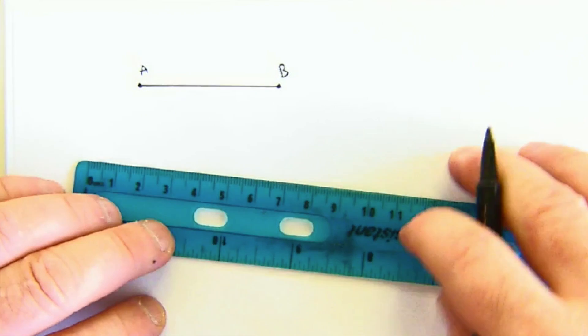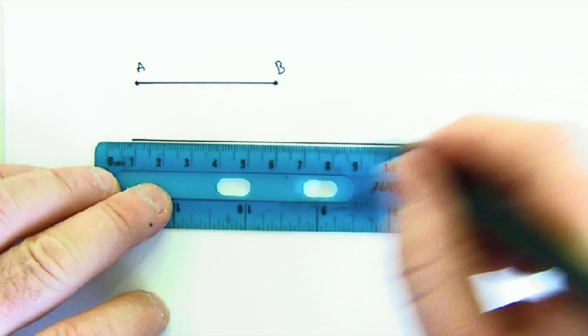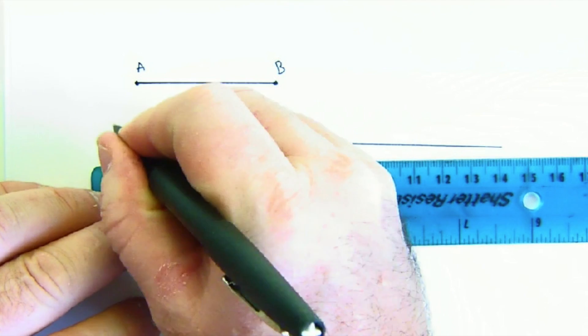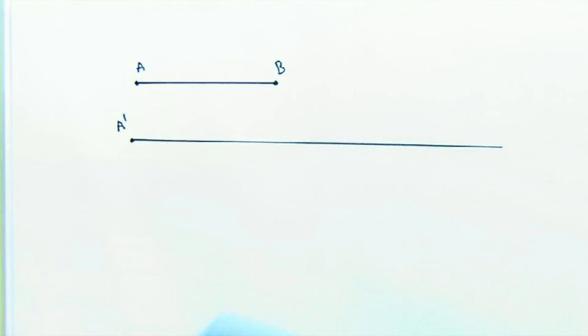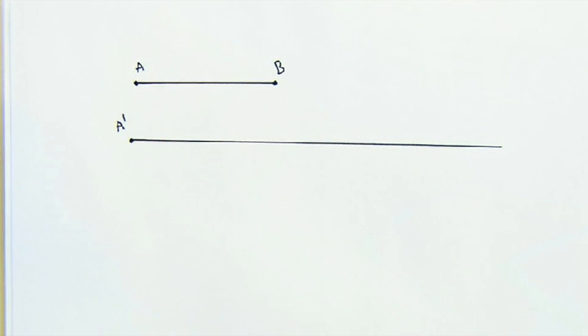Now what we want to do is create a place to copy it onto. I'll name that A prime because I want A to map to A prime. This is quite a simple task.